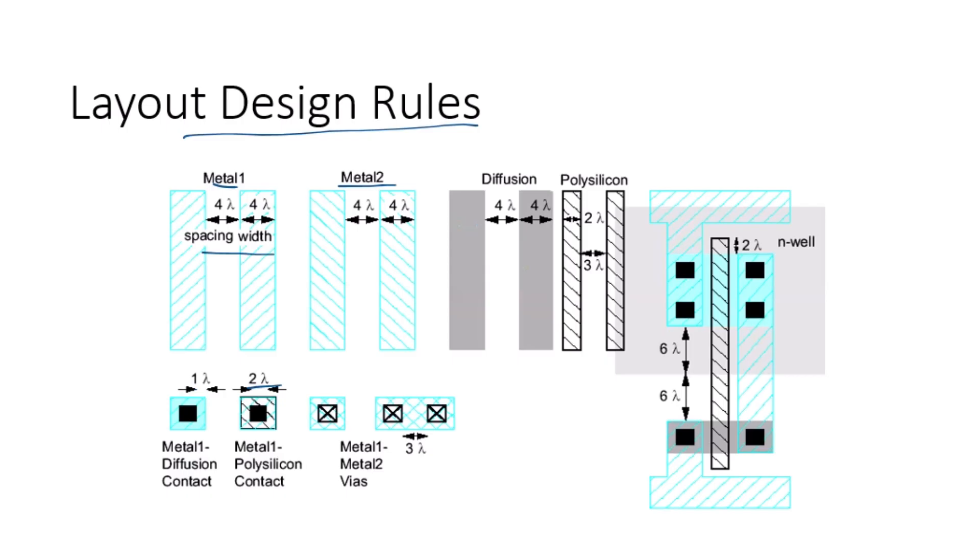Polysilicon uses a width of 2 lambda. Polysilicon overlaps diffusion by 2 lambda where a transistor is desired and has a spacing of 1 lambda away where no transistor is desired. Polysilicon and contacts have a spacing of 3 lambda from other polysilicon or contacts. N-well surrounds PMOS transistors by 6 lambda and avoids NMOS transistors by 6 lambda. Via also has a spacing requirement of 3 lambda. A via is an electrical connection between layers in a physical electronic circuit that goes through the plane of one or more adjacent layers.